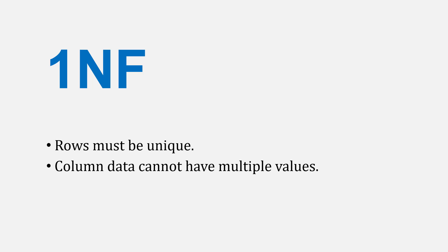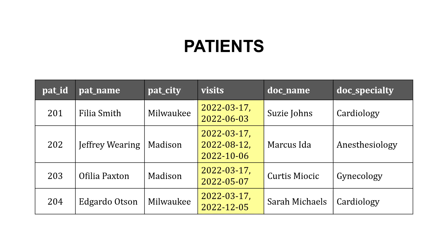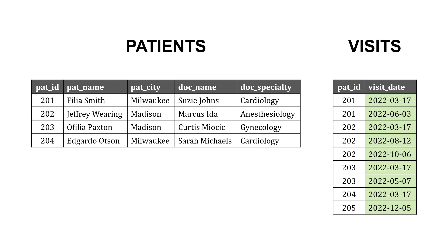Let's talk about first normal form. To meet this, our rows must be unique and column data cannot have multiple values. Imagine a patient table where there's a column called visits that has multiple pieces of data — every time the patient has a visit, we're just adding the date to it. That is not first normal form, and it becomes difficult to handle updates or analyze data this way. What we can do is split this up: we have a patients table, and we've pulled out their visits to a separate visits table with the patient ID and the date of their visit.